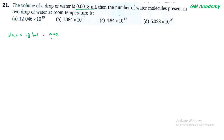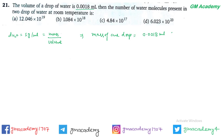Drop of water का mass निकालते हैं। Mass = density × volume, तो mass of one drop water = 0.018 ml × 1 gram per ml = 0.018 gram.